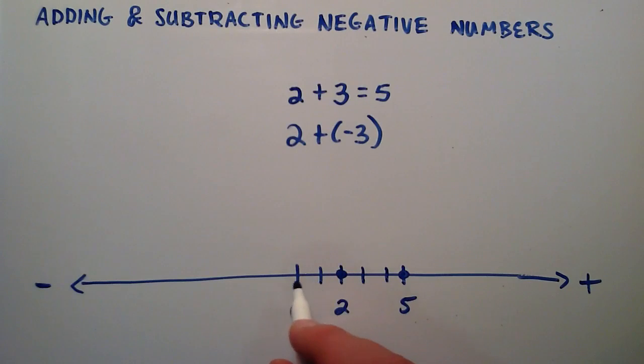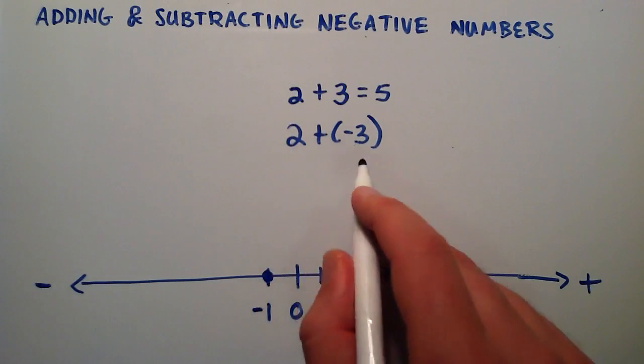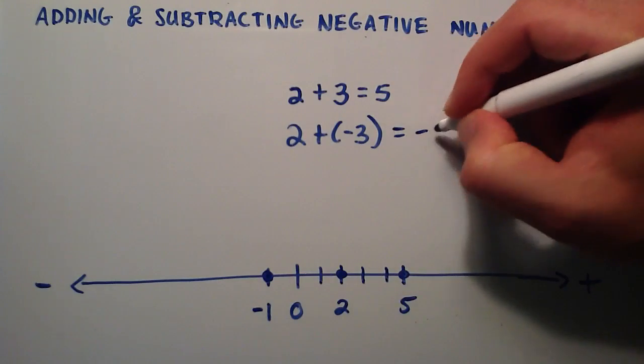we go 1, 2, 3 units in the negative direction, which brings us to the value negative 1. So therefore, 2 plus a negative 3 is equal to negative 1.